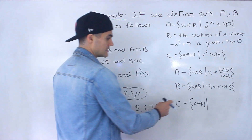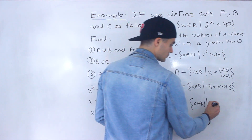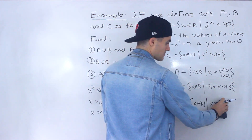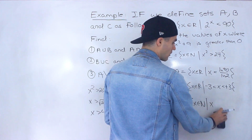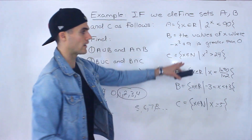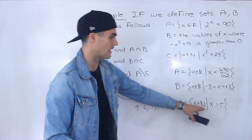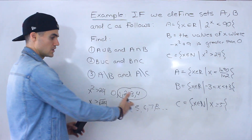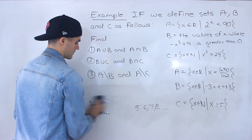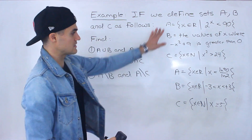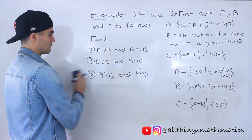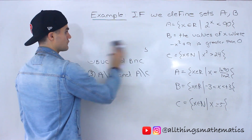So we can define set C as: x is all the natural numbers where x is greater than or equal to 5. We can also say all the natural numbers that are greater than 4 or greater than the square root of 24 — it doesn't matter, it still starts at 5. So all the positive integers starting at 5 till positive infinity. Now that we've simplified these sets, let's go and find all of the expressions.